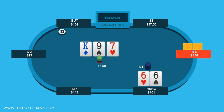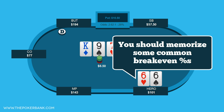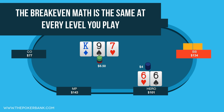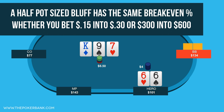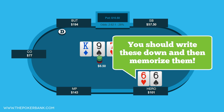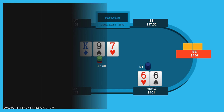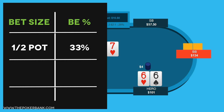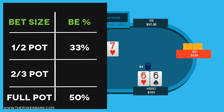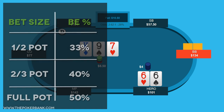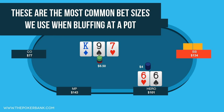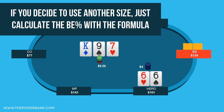One last thing I want to say is that you should memorize some of these breakeven percentages. Whether you are playing 1¢/2¢ online or $10/$20 live, the breakeven percentage math never changes. If you're betting half pot, the breakeven percentage will always be the same whether you're betting 15 cents into 30 cents or $300 into $600. If you bet half the pot, the breakeven percentage is 33%. If you bet full pot, the breakeven percentage is 50%. And if you bet a traditional two-thirds pot, the breakeven percentage is 40%. Know these percentages like the back of your hand, because these are roughly the bet sizes we use when bluffing. If you decide to use a less standard size when bluffing, like one-fourth pot or an overbet, just pull out the formula and do a quick calculation.